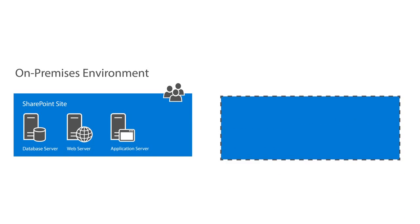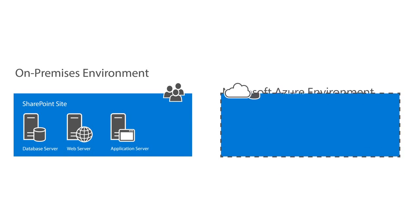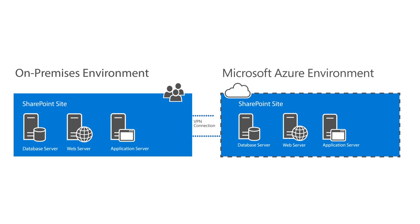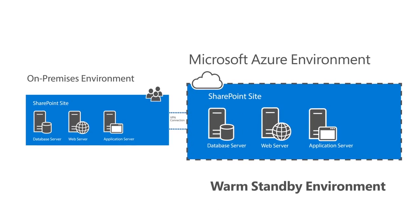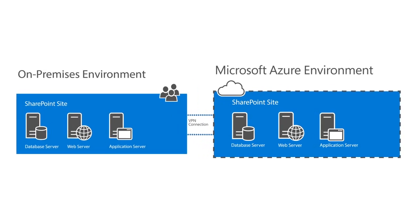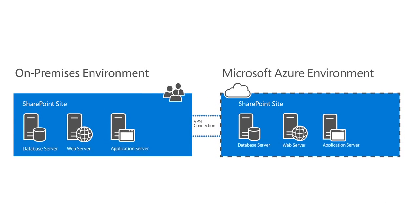You can connect your on-premises environment with a similar one in Azure using a VPN tunnel. You can quickly switch users to the warm standby with a few manual steps, which gives you time to troubleshoot the on-premises problem.